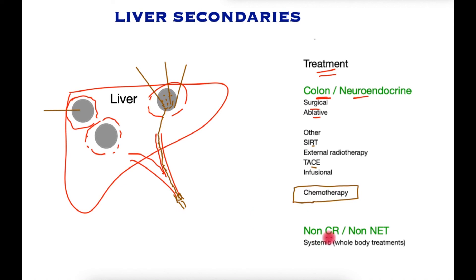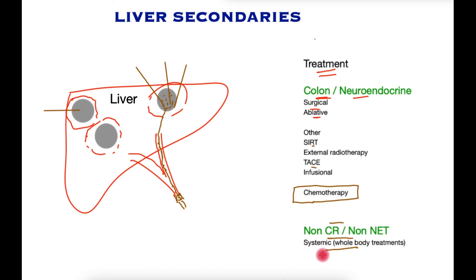Generally for non-colorectal, non-neuroendocrine metastases, systemic or whole body treatments such as chemotherapy and immunotherapy are deployed to contain the cancer.